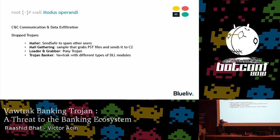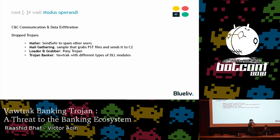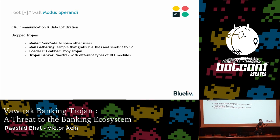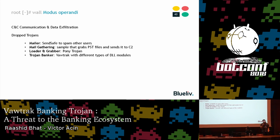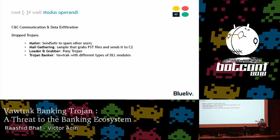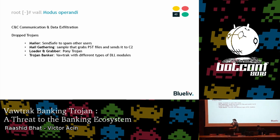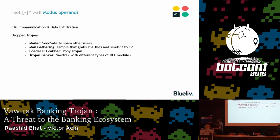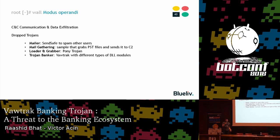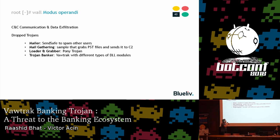They kept dropping the Pony Trojan as well, since that was another source of revenue — those credentials could give access to FTP servers and SSH servers, or be sold on markets. And of course they also dropped Vawtrak.